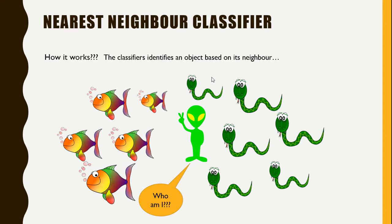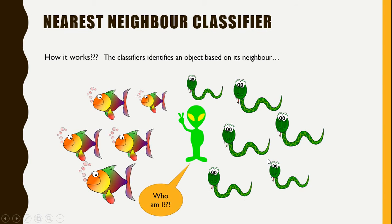It's not advisable to stop there. We can also see its two nearest neighbors, which turns out to be a fish and a snake — now this is a tie. So let's see another neighbor. It turns out that its three nearest neighbors include two snakes and a fish. Going further, its four nearest neighbors include three snakes and one fish.